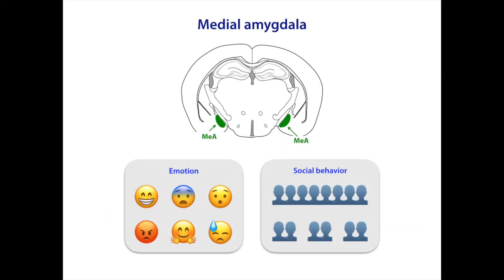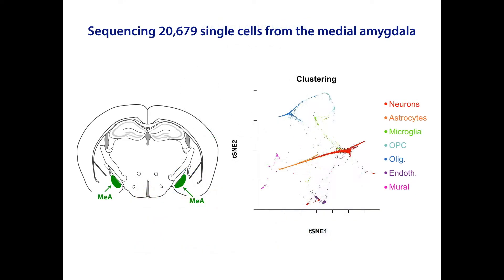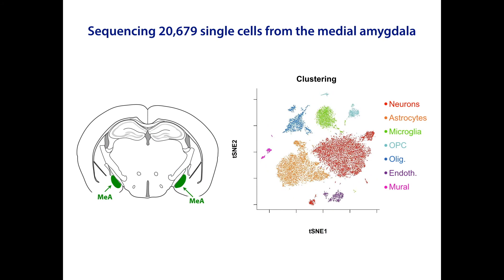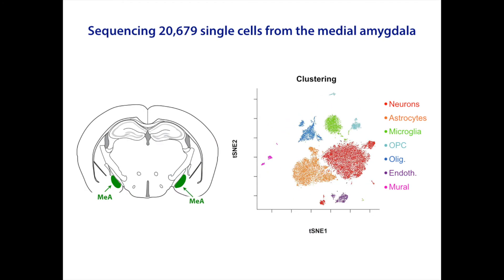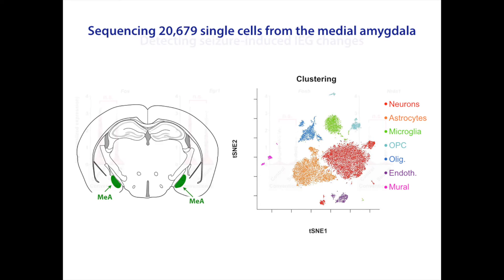We applied this method to the medial amygdala, a brain region important for the modulation of emotional processing and social behavior. Using X-Seq, we generated the first detailed molecular taxonomy of medial amygdala cells, including 16 transcriptionally distinct neuronal subtypes, as well as several non-neuronal cell types.